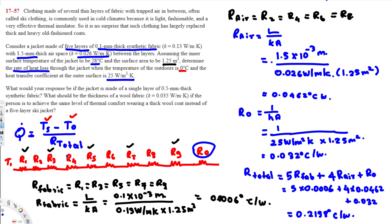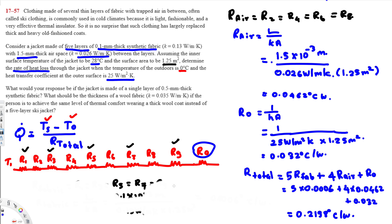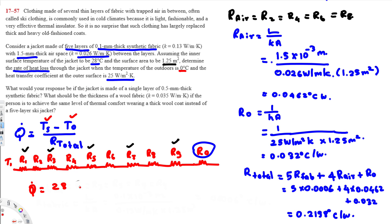Now we can calculate Q̇. Q̇ = (T_surface − T_outdoor) / R_total = (28 − 0) / 0.2198 = 127.39 W. That's the answer to Part 1.